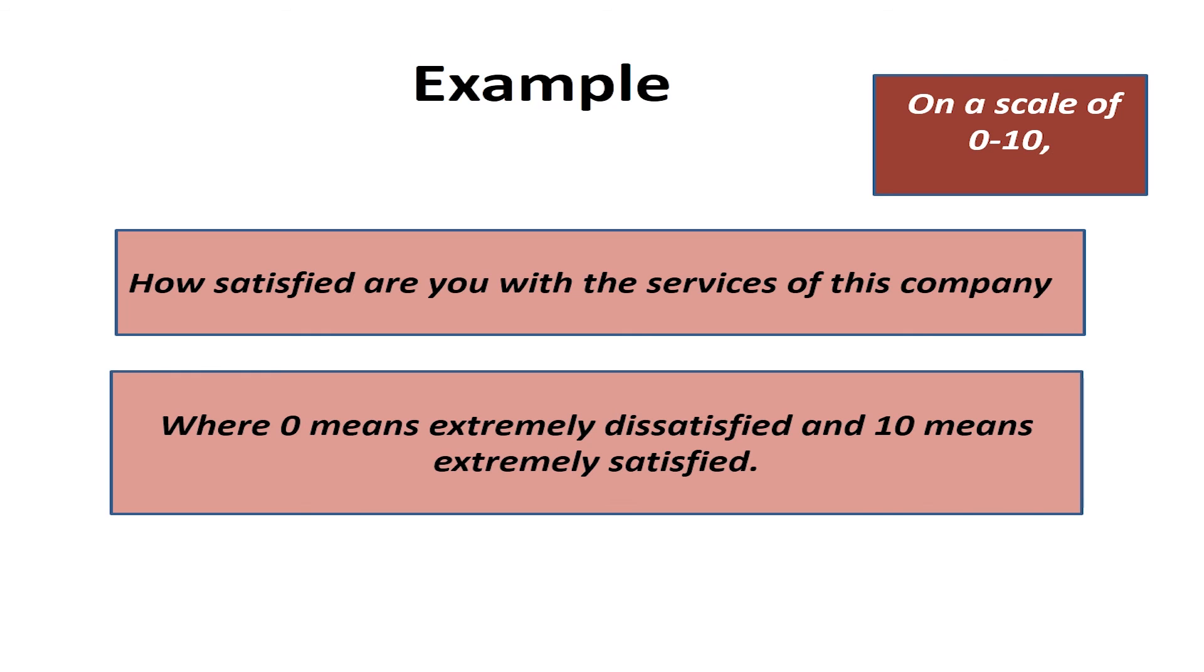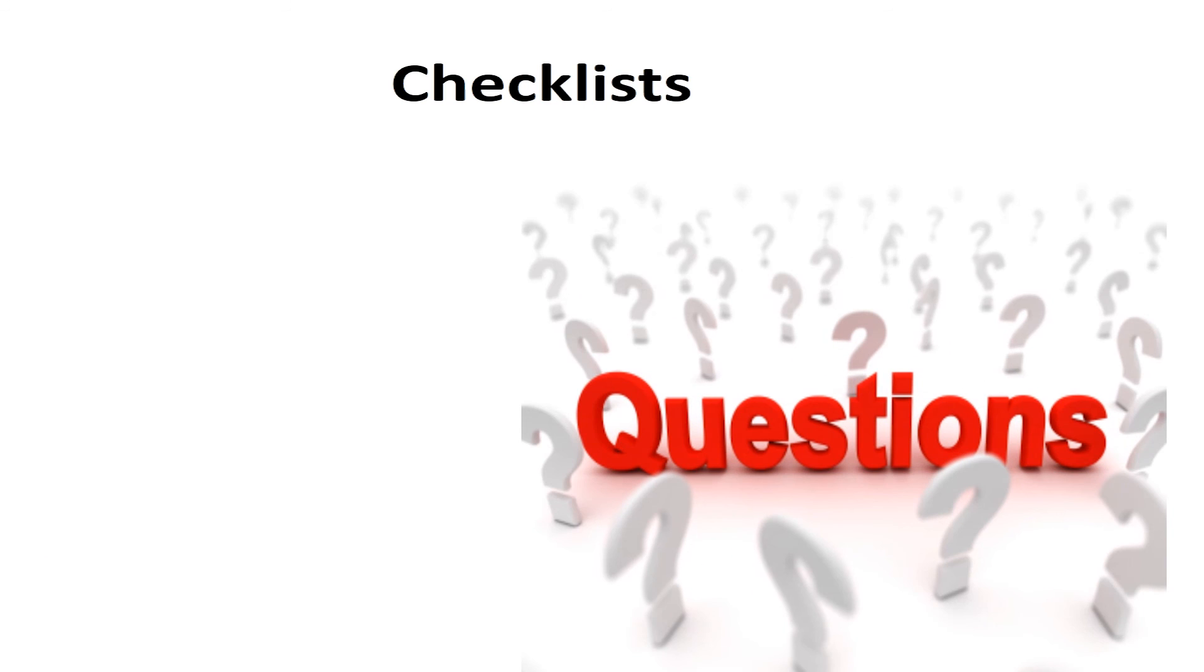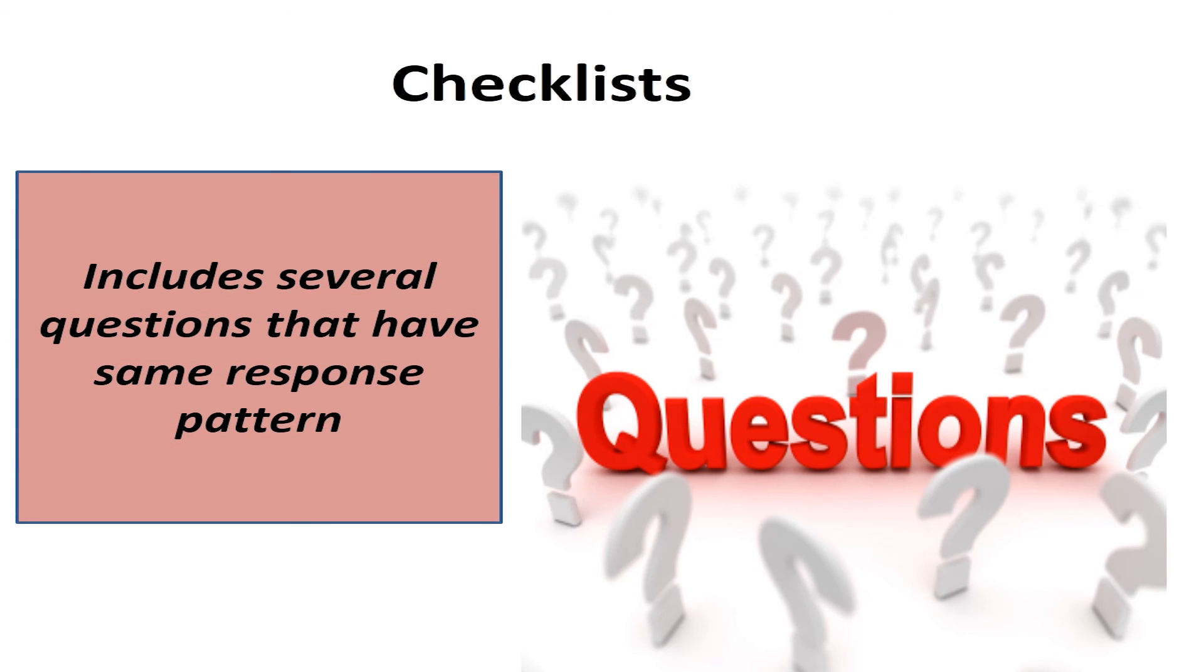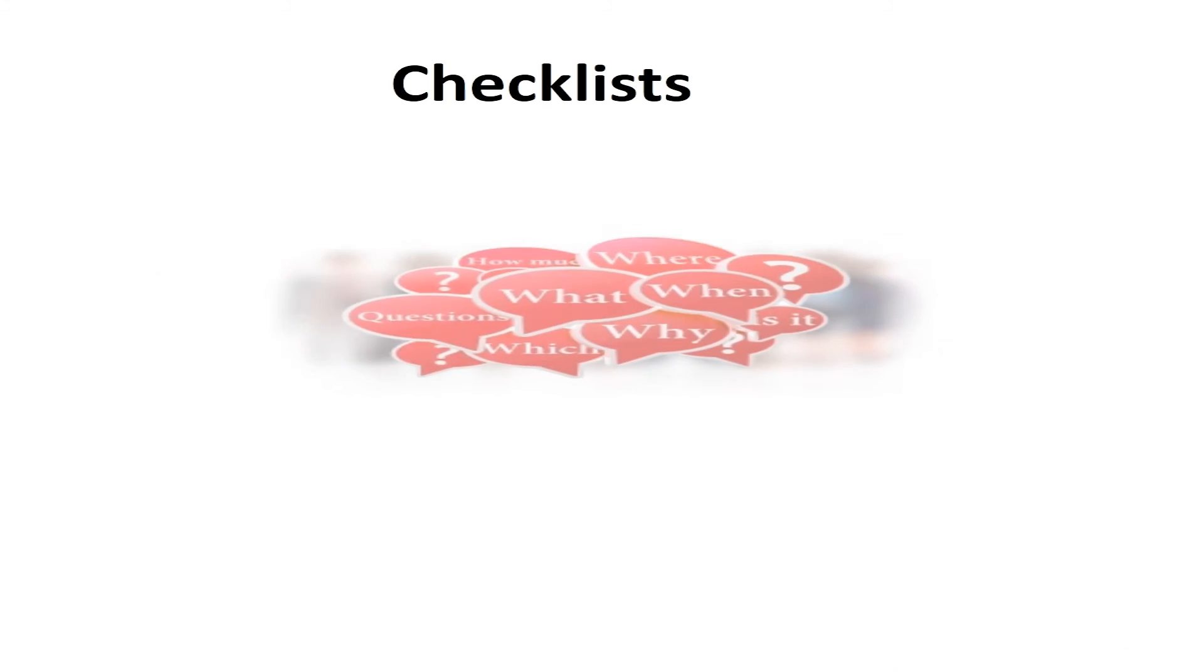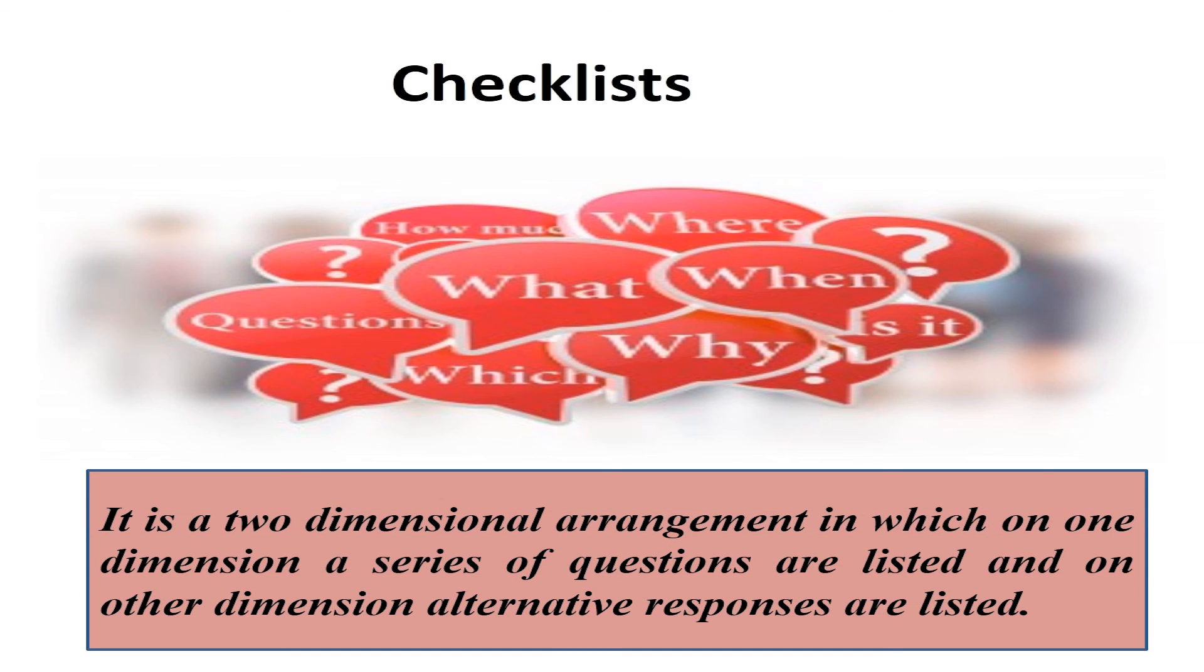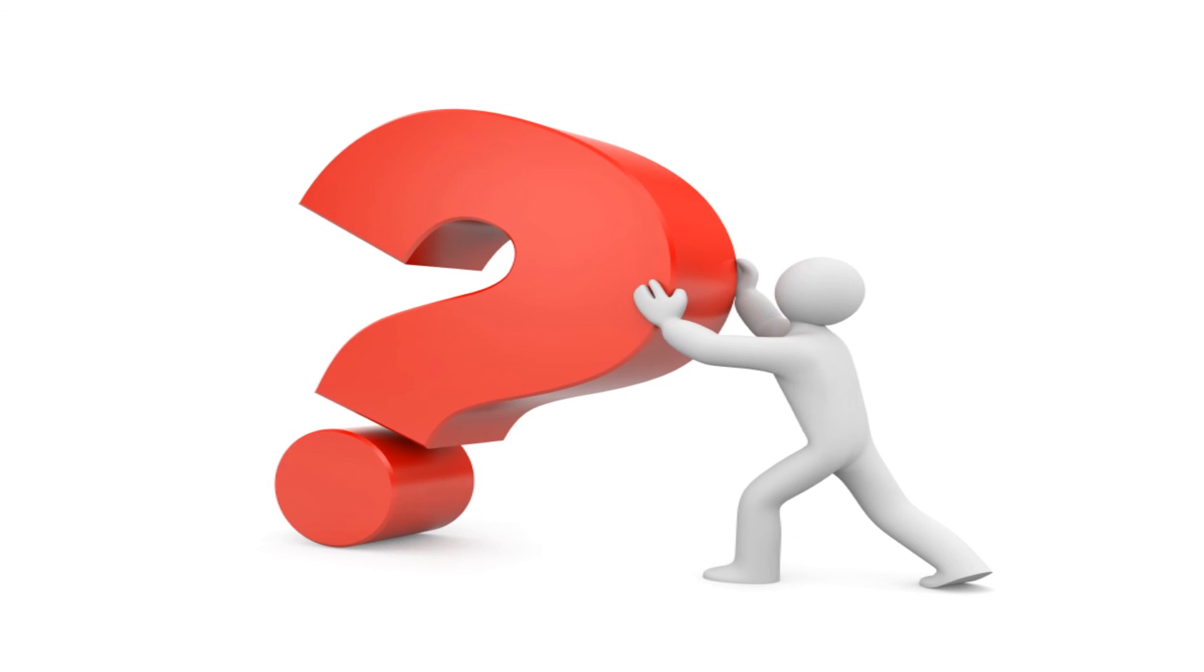The next type of questions are checklists. It includes several questions that have the same response pattern. It is a two dimensional arrangement in which, On one dimension, a series of questions are listed, and on the other, alternative responses are listed. So learners, these were the different types of questions. Thank you.